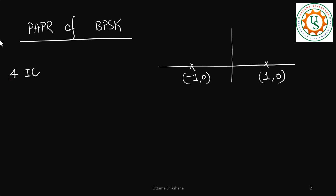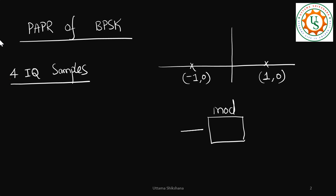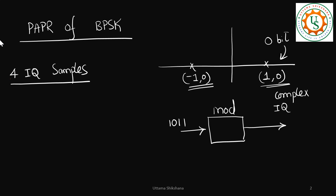Now let us take 4 IQ samples. This is a modulation block where the inputs are bits — I am taking 4 bits — and the output will be complex IQ values. But here, these values are going to be real only. So, for the 4 values: bit 0 is mapped to minus 1, and bit 1 is mapped to 1. So the 4 values are: minus 1, 1, minus 1, minus 1.